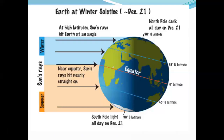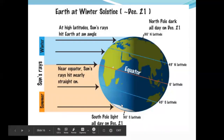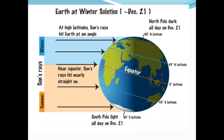Due to the Tropic of Capricorn receiving direct sun rays, the days are longer and nights are shorter in the southern hemisphere. As you can see in this diagram, the sun rays fall directly on this portion, so the days are longer, nights are shorter, and it is summer season there.